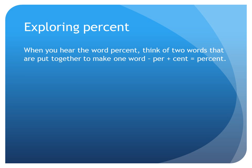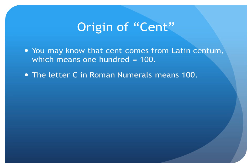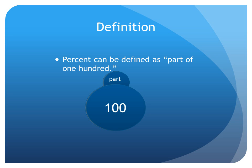When you hear the word percent, think of two words that are put together to make one word. Per and cent are together: percent. Percent is part of 100. You may know that cent comes from the Latin word centum, which means 100. Percent can be defined as part of 100. When you say per and cent slowly, it starts to make sense — percent.